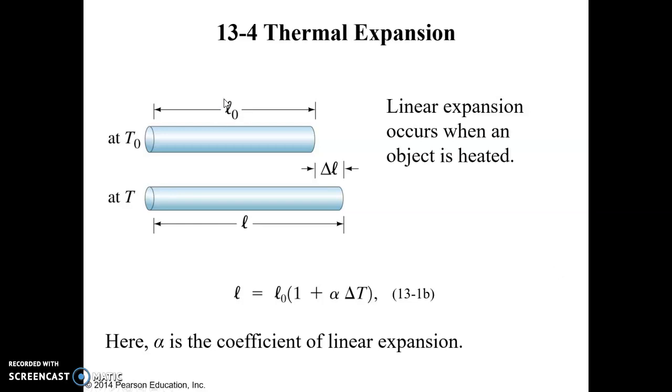If we have a cylinder of some initial length L sub not at some initial temperature T sub not, and then we increase the temperature to a final temperature T, the difference between these two is delta T. So we've started at some initial temperature, went to a final temperature. We're assuming that temperature is going up by an amount delta T, and it's going to cause a delta change to occur in length.